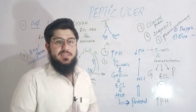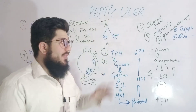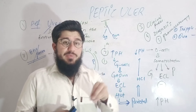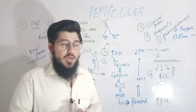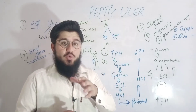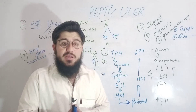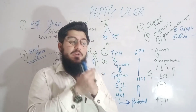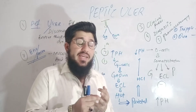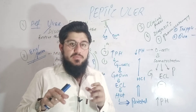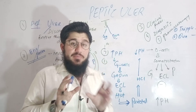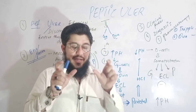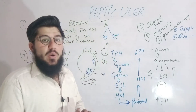Regarding the clinical presentation of peptic ulcer: the main symptom is epigastric pain. In some patients, epigastric pain occurs after taking food, while in others the pain subsides after eating. One patient says 'as I take food, I feel pain,' another says 'as I take food, my pain subsides.' These two situations actually represent two different types of ulcers — gastric ulcer and duodenal ulcer.